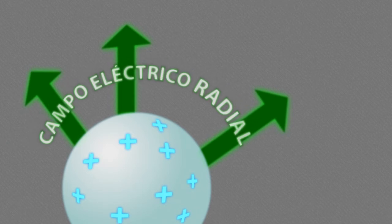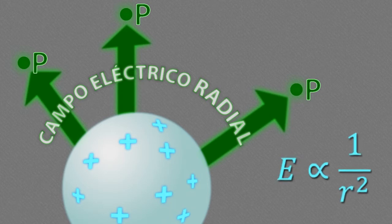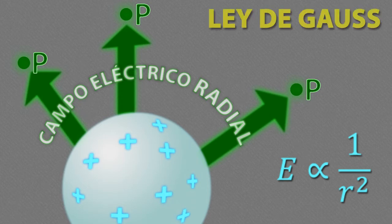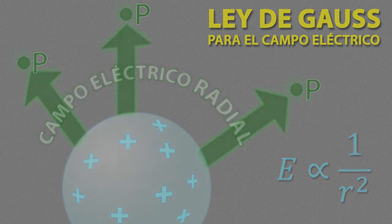The fact that this field is radial and that every point P depends on the inverse of the square of the distance from the charge to P confirms the validity of one of the laws of Electromagnetism called Gauss's Law for the electric field. Gauss's Law is one of the four basic laws of Electromagnetism expressed through Maxwell's equations.